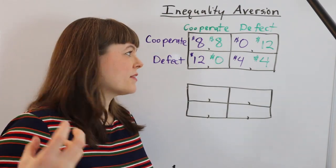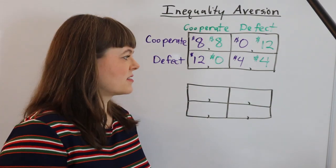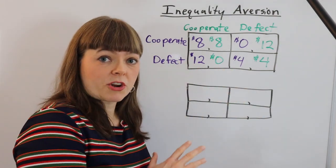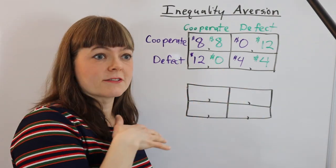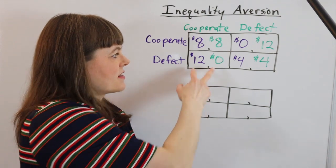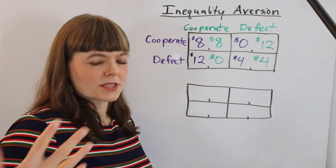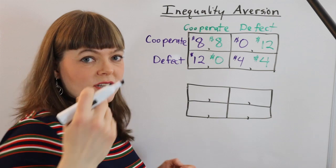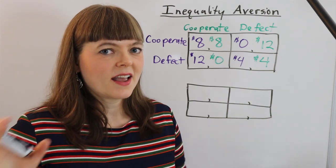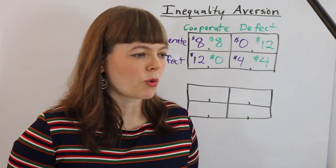If you actually build that into people's utility functions, the game theory may still work out. It's not that the game theory is false, it's just that the payoffs are not just equal to money. So let's actually build a utility function that would capture this. I'm going to show you a very simple one.